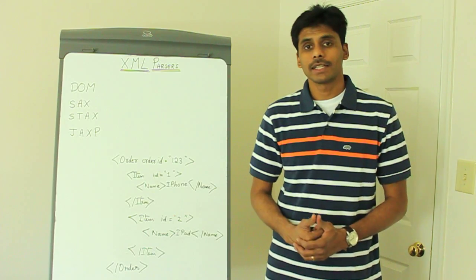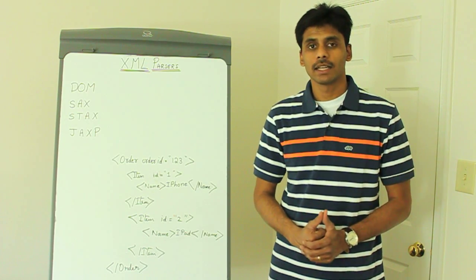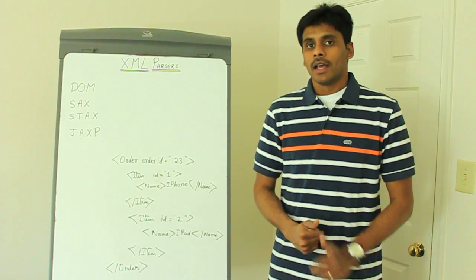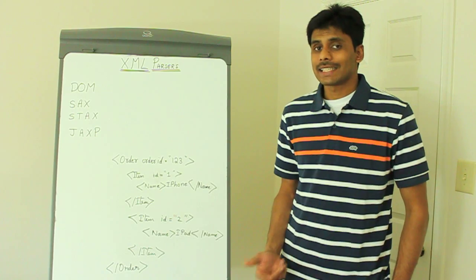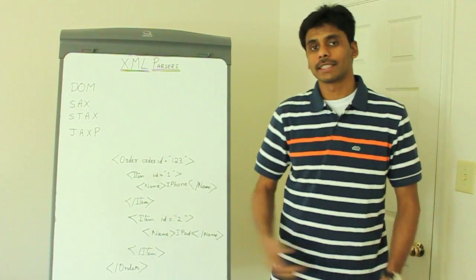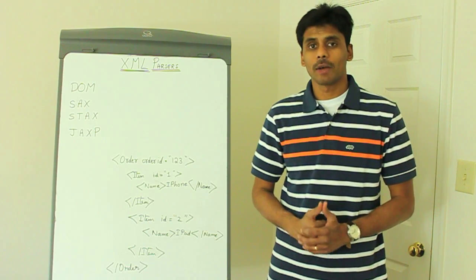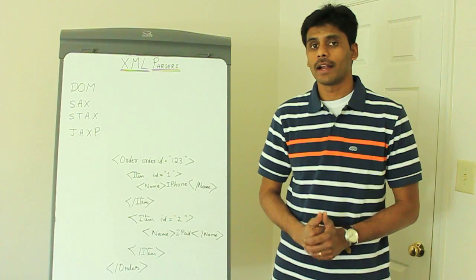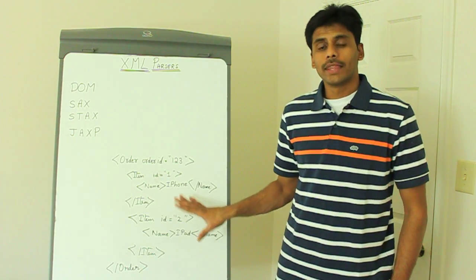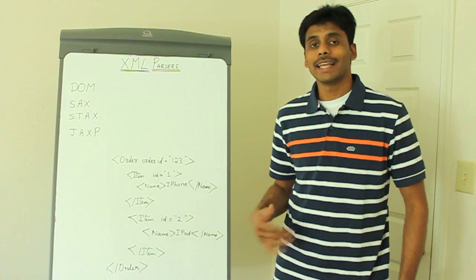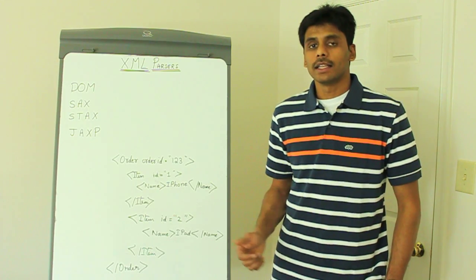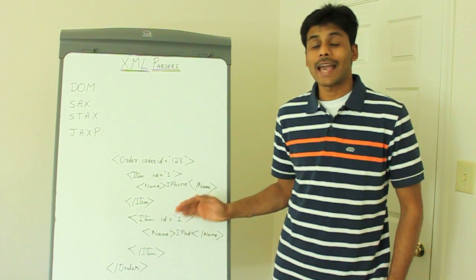An XML parser is a program that allows our applications to read, or build and write XML documents. There are three different types of XML parsing standards available. The first one is the DOM parser. DOM stands for Document Object Model. A DOM parser will load the entire order.xml into memory, and then using the standard DOM interfaces, we will be accessing the different elements within this XML document hierarchically.